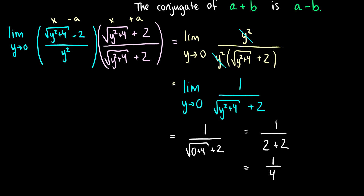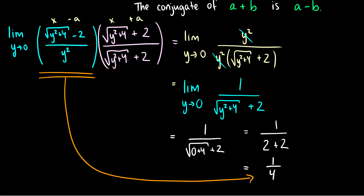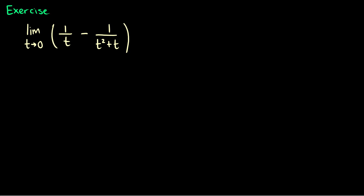So the limit of this nasty expression is just one fourth. By using the conjugate — essentially multiplying by 1 — we were able to turn it into a form that we can reduce and then get a value out of. With the graph we could see clearly that the limit was 1 fourth, but just looking at it algebraically it's very hard to tell. So those are three really important methods. Let's do an exercise or two and practice some more.